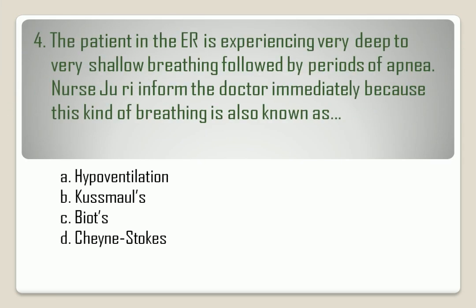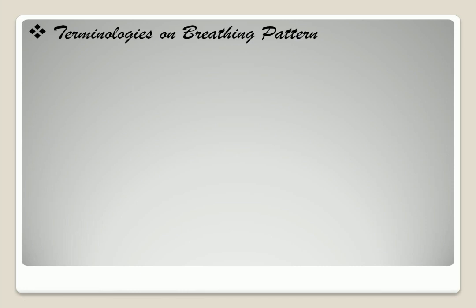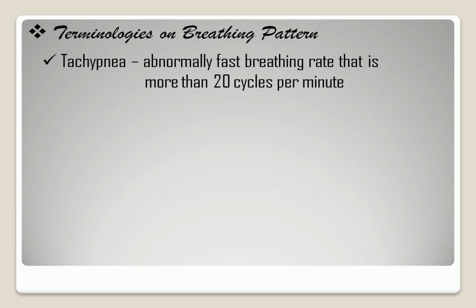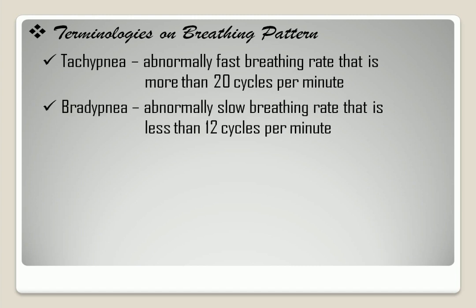Question number 4. The correct answer is letter D. Basic terminologies on breathing pattern: Tachypnea — abnormally fast breathing rate, more than 20 cycles per minute. Bradypnea — abnormally slow breathing rate, less than 12 cycles per minute. Apnea — the cessation of breathing.